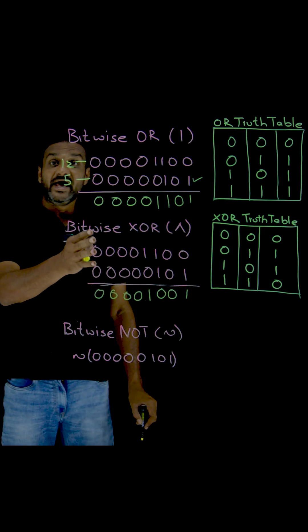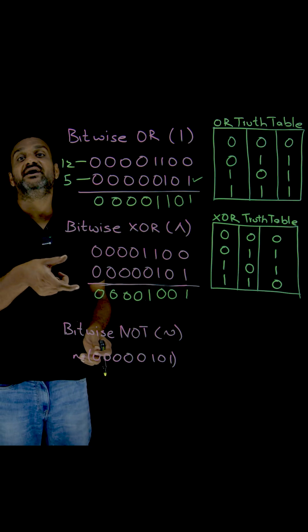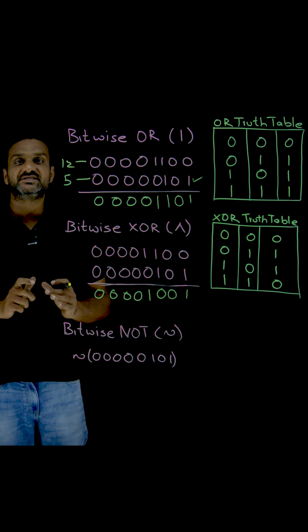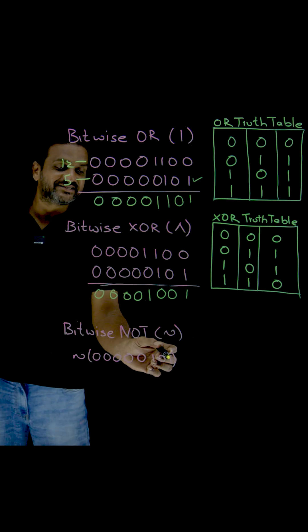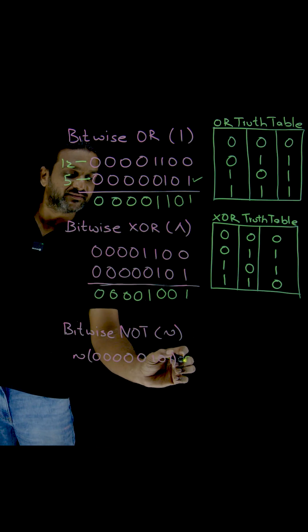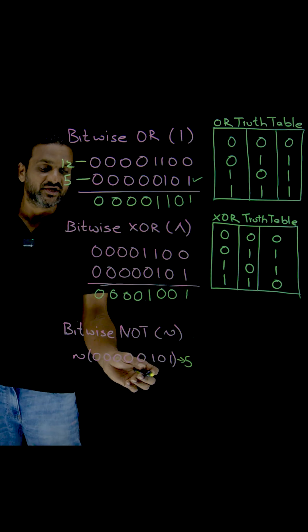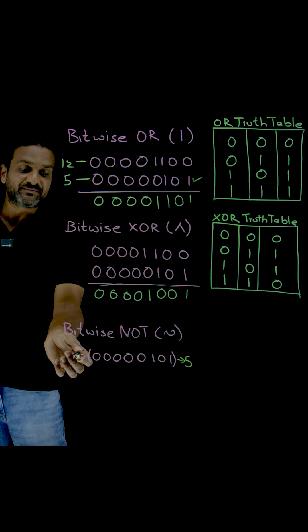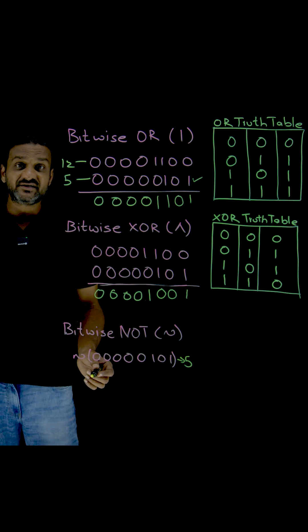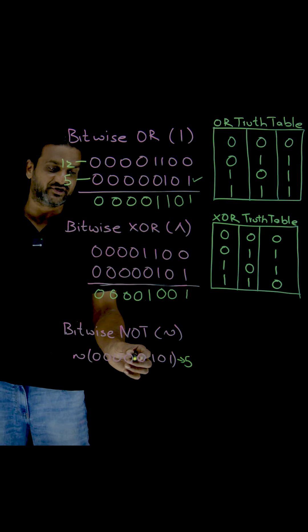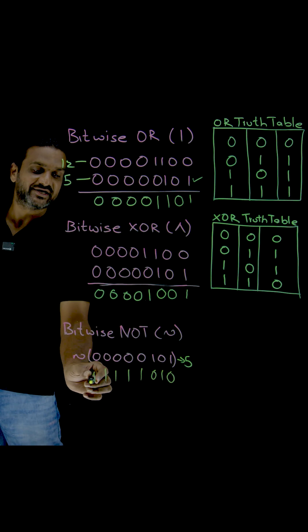Bitwise NOT means just complement each and every bit in the given number. I've taken 5 — the decimal equivalent of this binary number is 5. If we apply bitwise NOT, we have to just flip the bits: if it is 1, make it 0; if it is 0, make it 1. So the zeros become one, and these bits are all flipped.